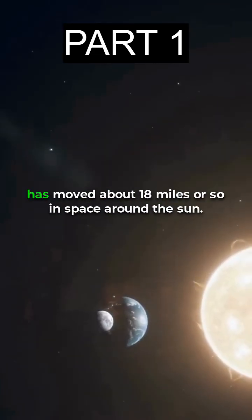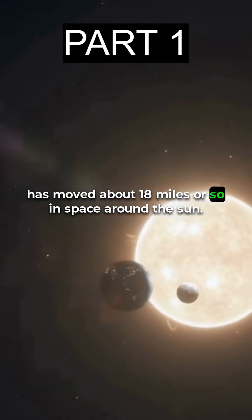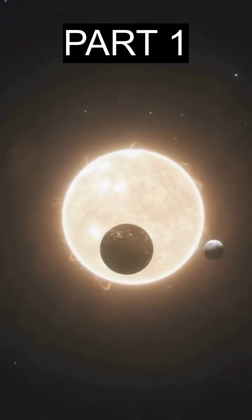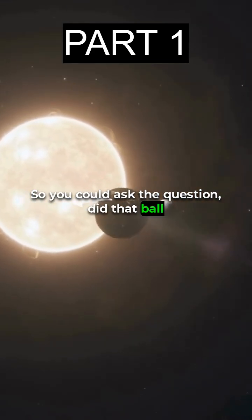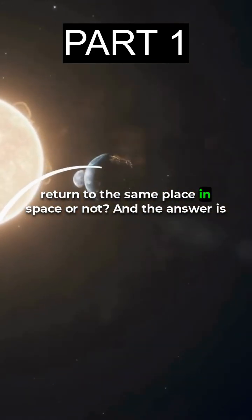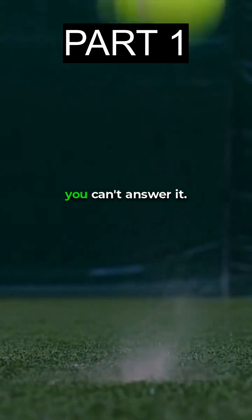So in that second, the earth has moved about 18 miles or so in space around the sun. So you could ask the question, did that ball return to the same place in space or not? And the answer is, you can't answer it.